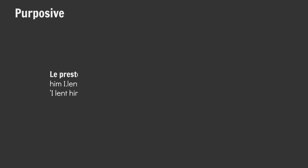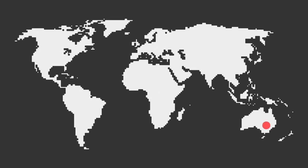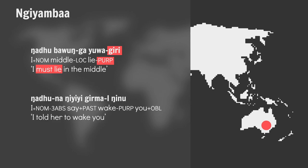Purposive modality marks purpose — like in Spanish, as in: the purpose behind me lending the money is so that he can buy a ticket. Australian languages make heavy use of purposive modality — for the most part it's used for obligations. Like in this example from Nyamba. However, Nyamba also uses it to express indirect commands.